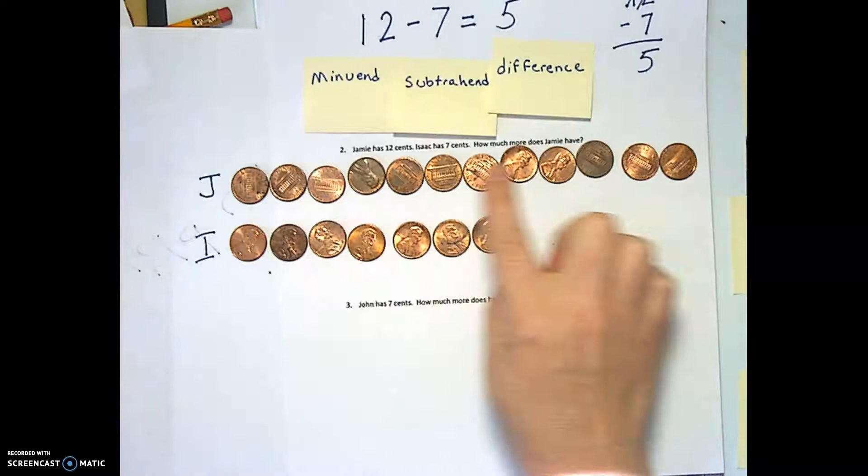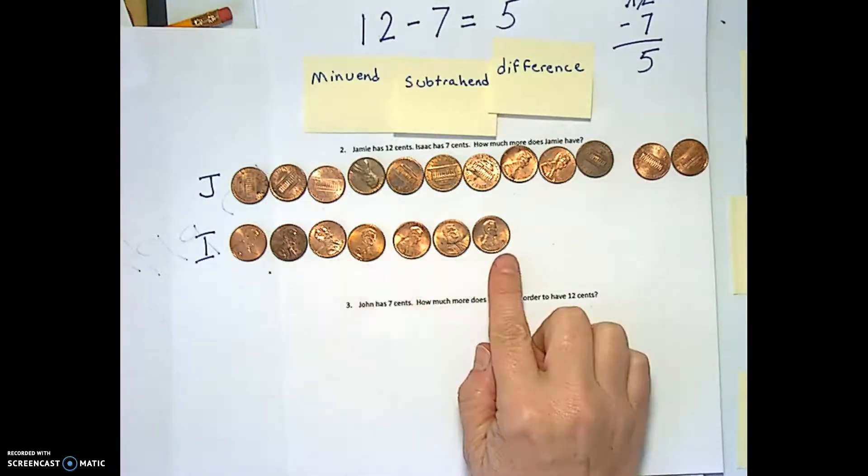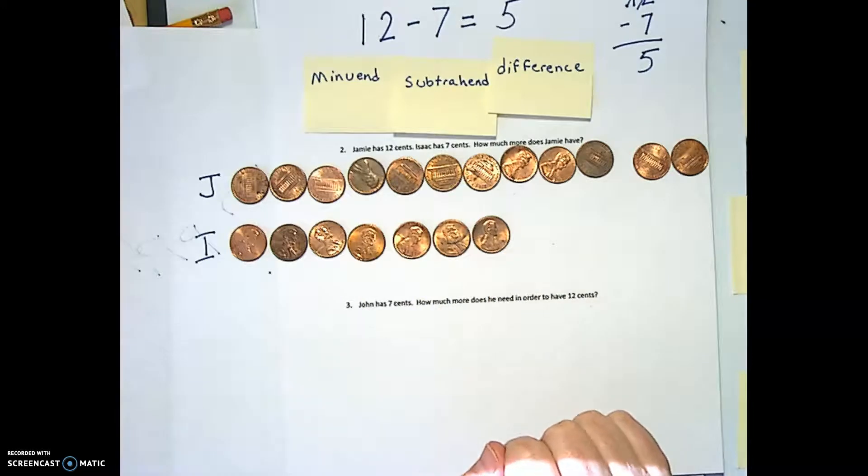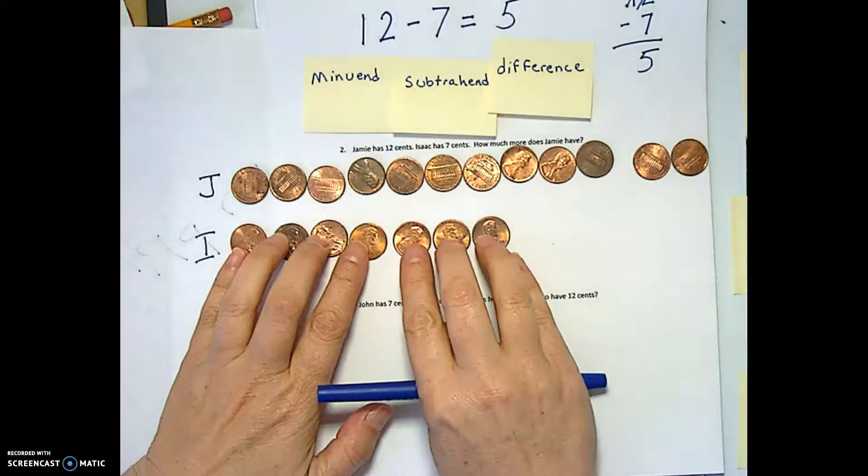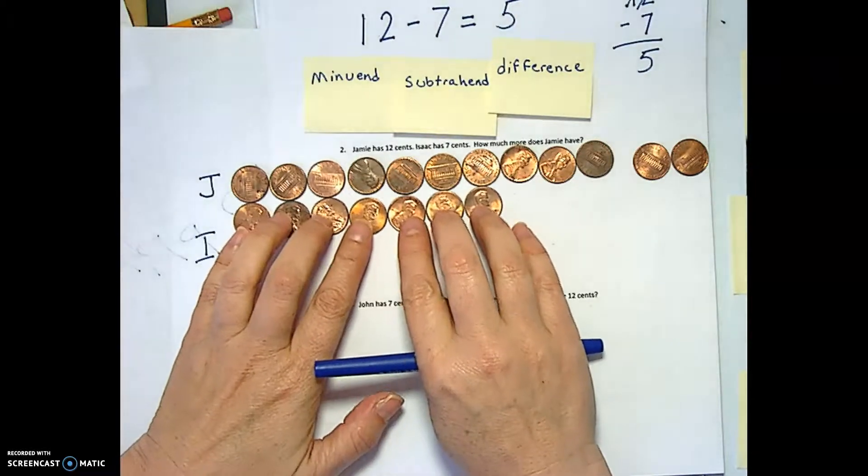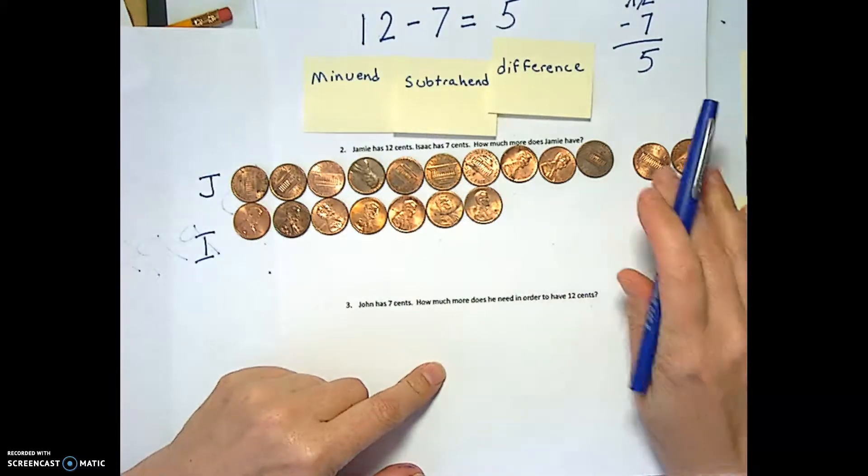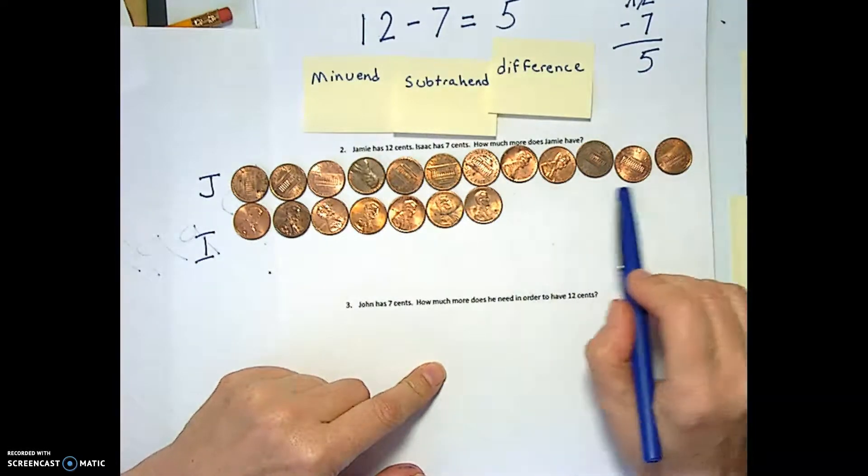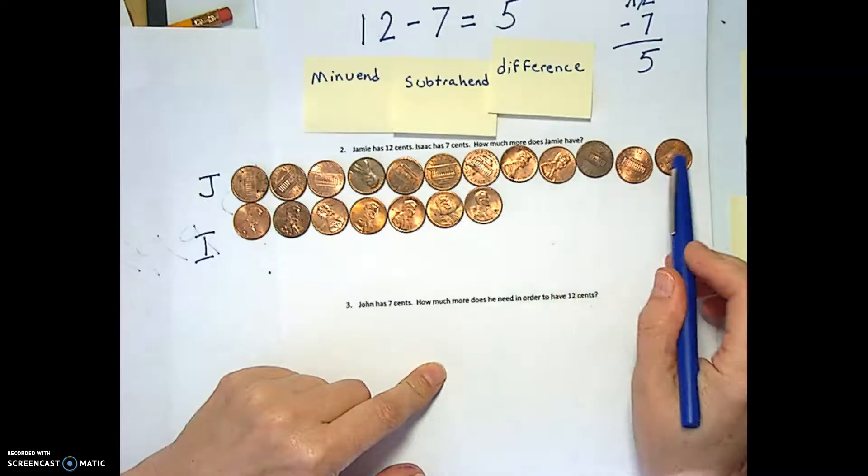We've got Jamie's 10, 11, 12 cents, and Isaac's 7 cents, and we're saying how much more does Jamie have than Isaac has. And this concept you're comparing, you're finding a difference between the two by comparing them. So if Jamie has 12 cents and Isaac has 7 cents, you can line these up one to one and look at how many more Jamie has than Isaac. So one, two, three, four, five more than Isaac.